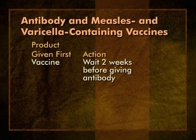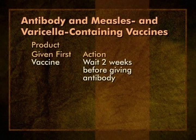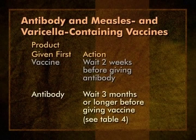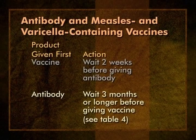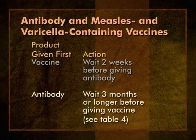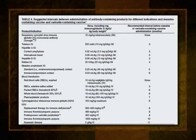If a measles or varicella containing vaccine is administered before the antibody-containing product, an interval of at least two weeks should separate them. This interval allows the vaccine virus time to replicate and produce an immune response before encountering the antibody. If the antibody-containing product is given first, the interval between it and measles or varicella containing vaccine should be three months or longer, depending on the antibody product and dose that was administered. There is a table of these intervals on page eight of the general recommendations. The table is also available on the Updates and Resources webpage and in the course text.